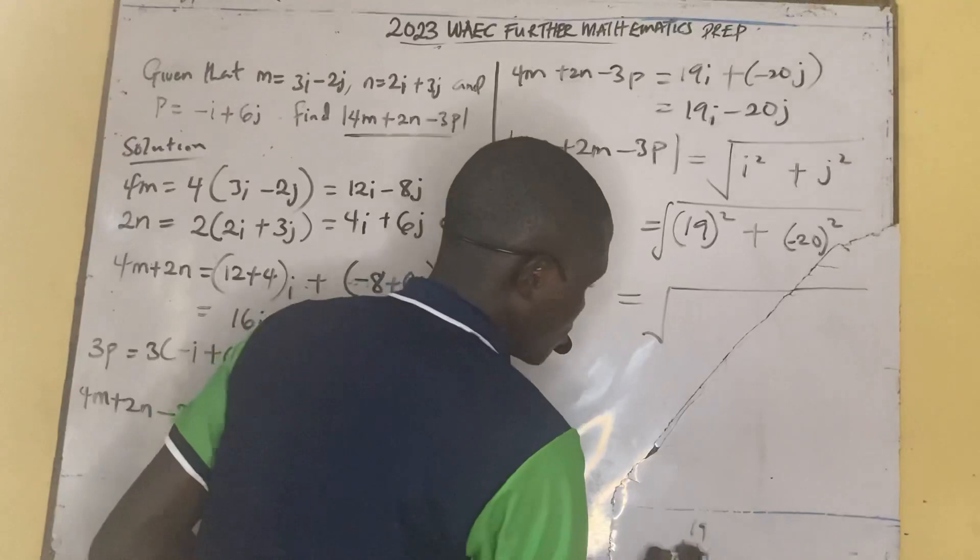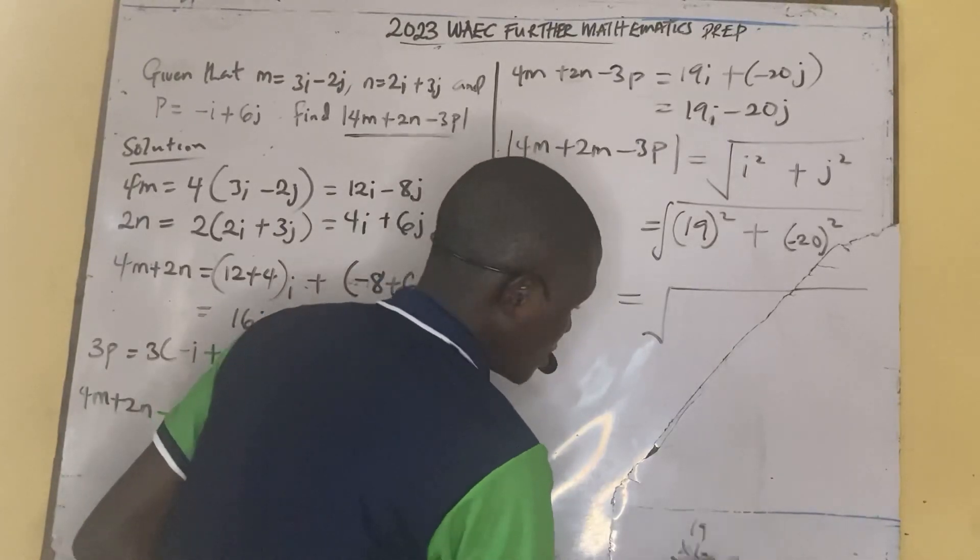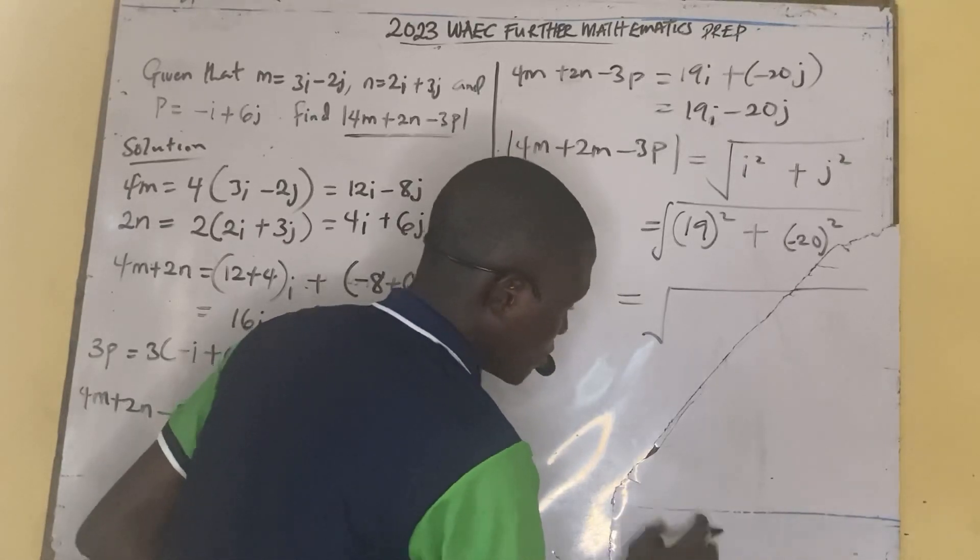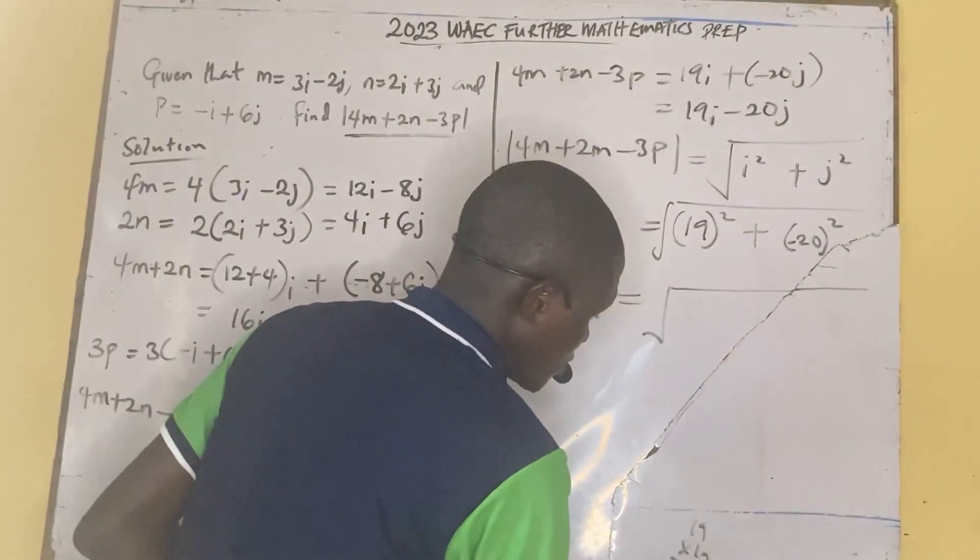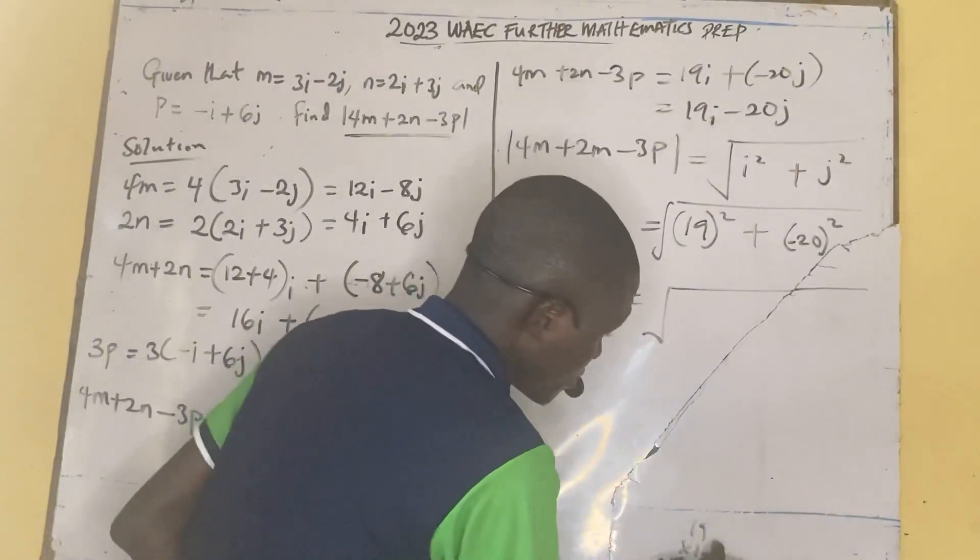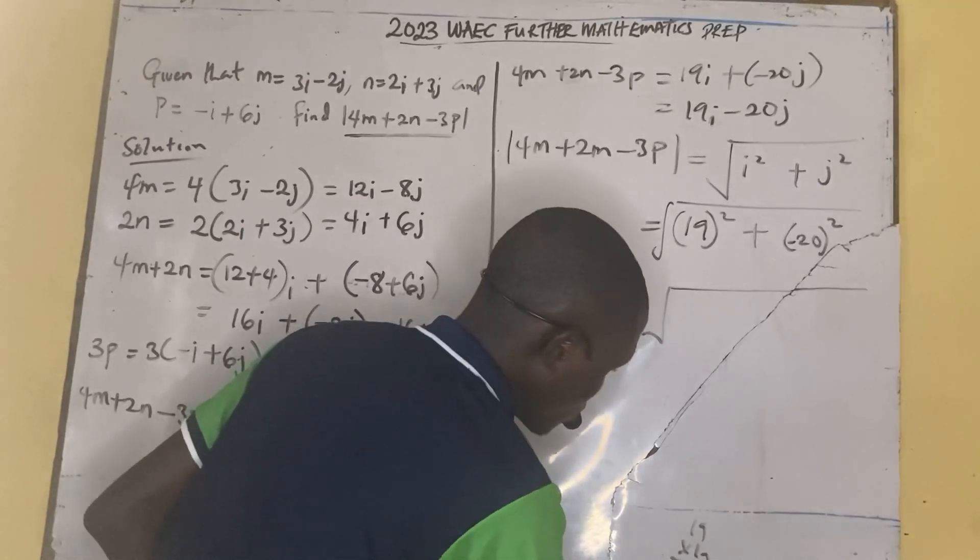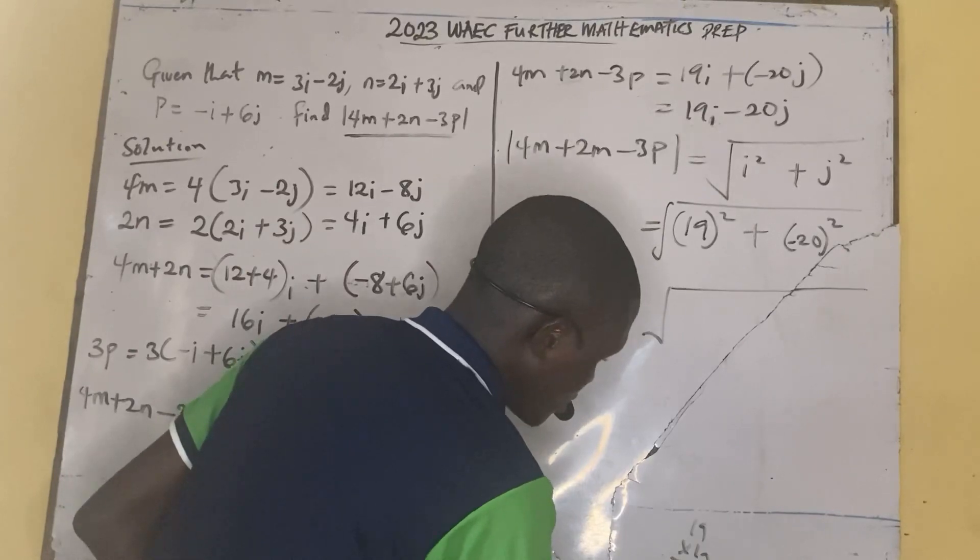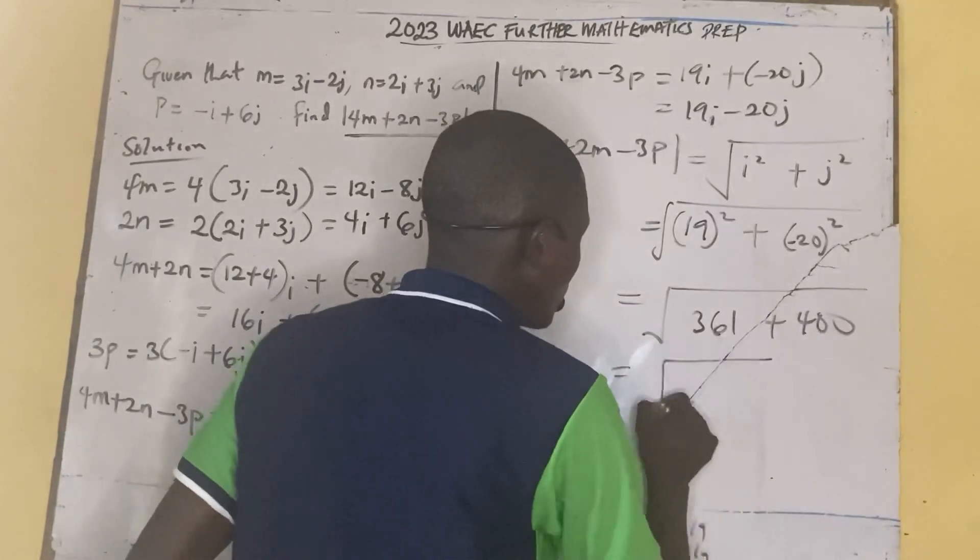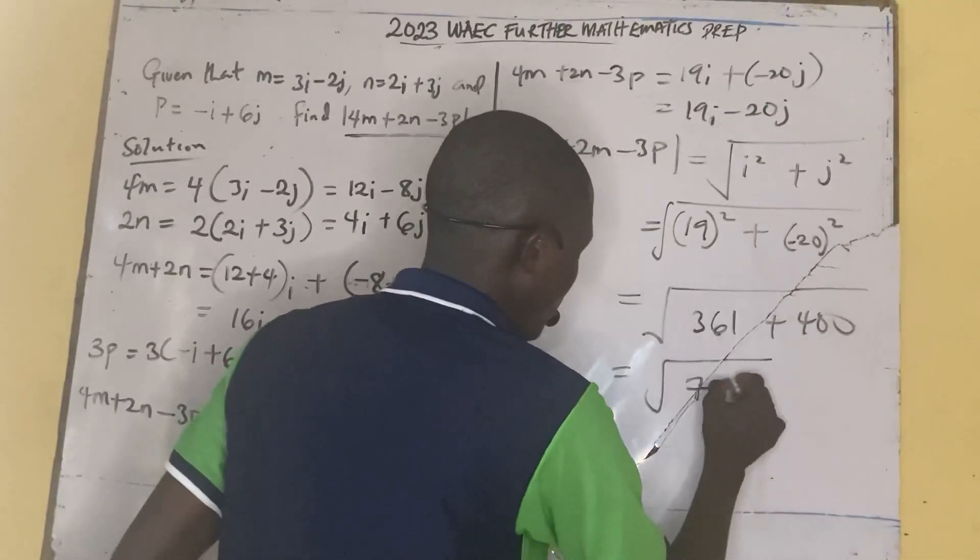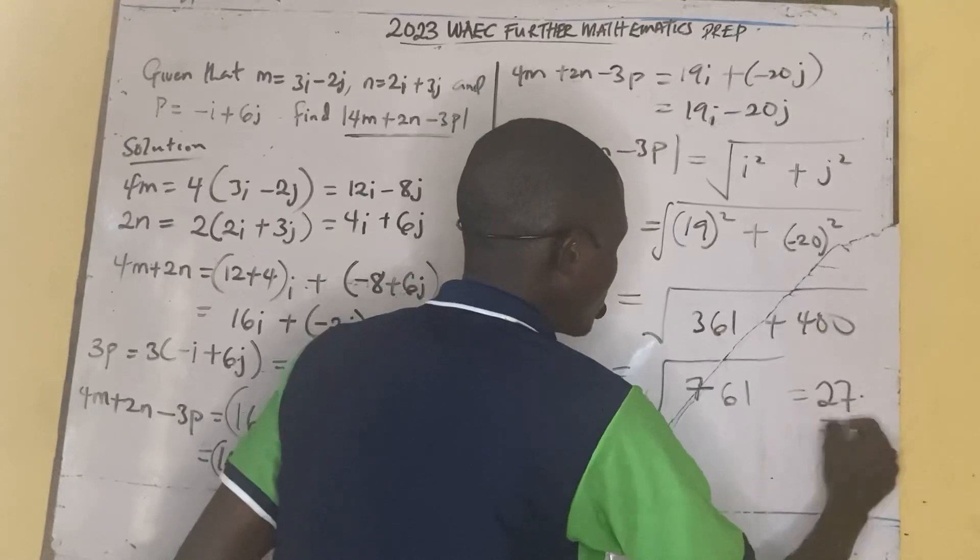So whatever it gives you as you calculate it, 19 times 19 will be, you can do that mathematics, 9 times 9 is 81, carry the 8, 18, and then this is going to be 9 times 1 is 9 plus 8 is 17. So 361. Then 361 plus 400 gives you 761.